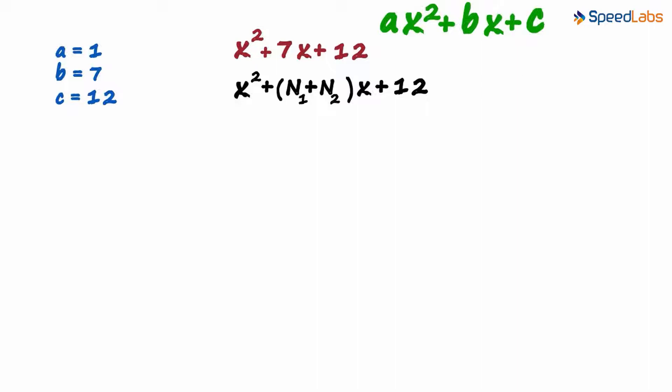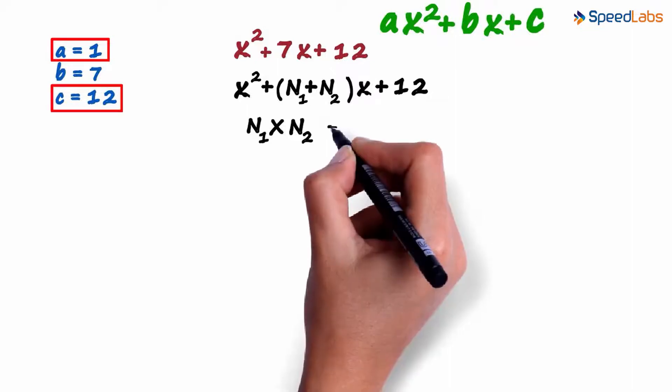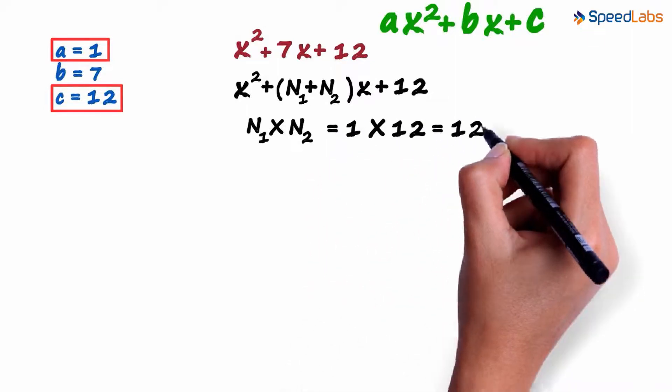There is another condition. It says that the product of these two numbers should equal the product of a and c. a is 1 and c is 12. So the product equals 1 multiplied by 12, which equals 12.